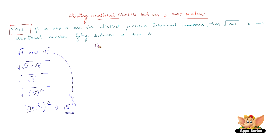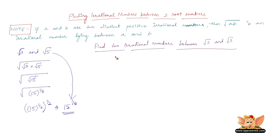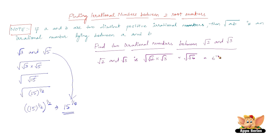Let us take another example. Now let us find two irrational numbers between √2 and √3. Let √2 = a and √3 = b. Therefore, the irrational number lying between √2 and √3 is √(√2 × √3), which is √(√6), because √2 × √3 = √6. Since √6 = 6^(1/2), taking its root gives 6^(1/4). So 6^(1/4) is one irrational number lying between √2 and √3.